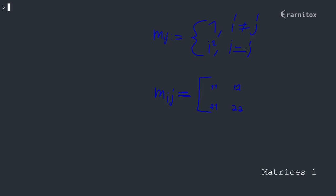If i is equal to j — where i is the index that grows downward and j is the index that grows to the right — then i squared would be 1 in this example. And if i is unequal to j, it's also 1. So we fill in the matrix: 1 here, 1 there, 2 squared is 4, and here it's unequal so it's 1. That's the matrix.